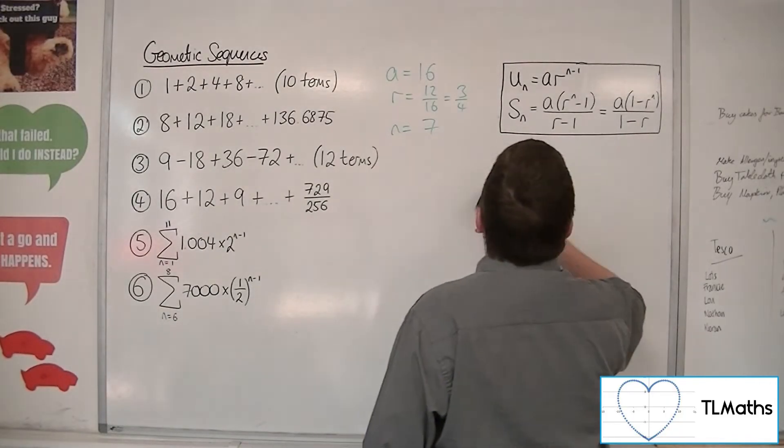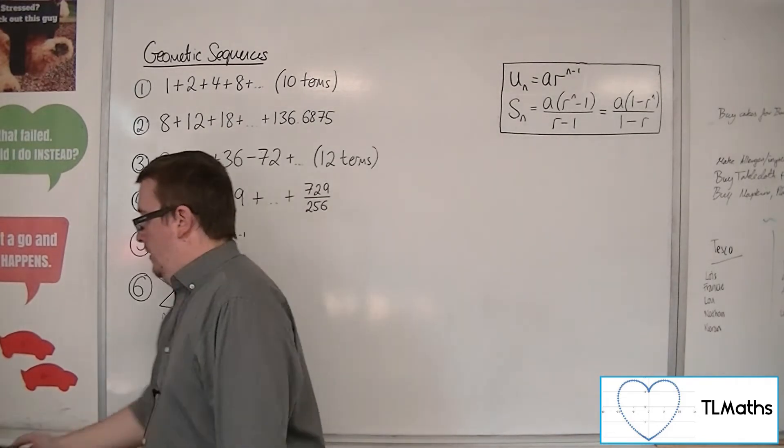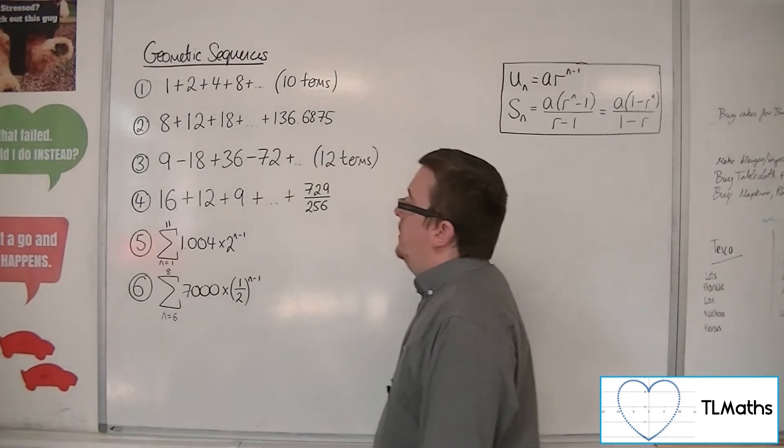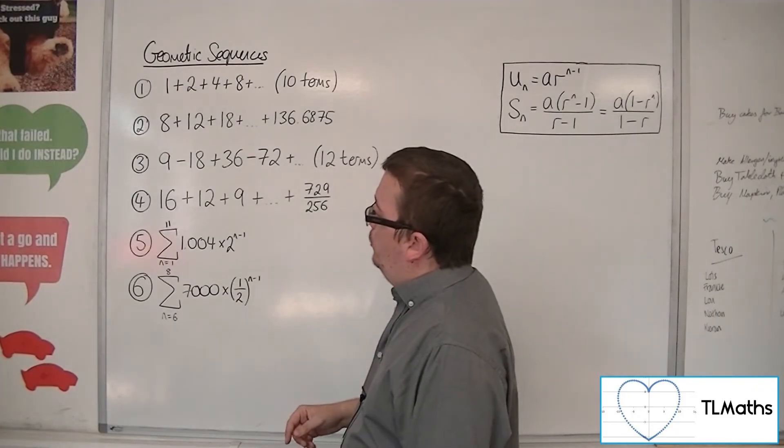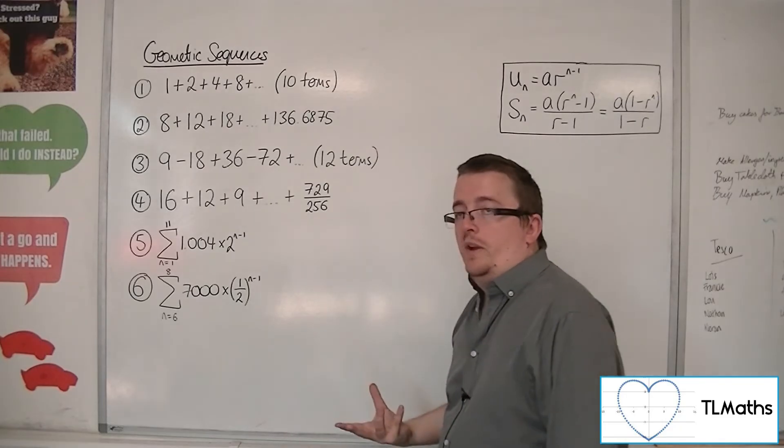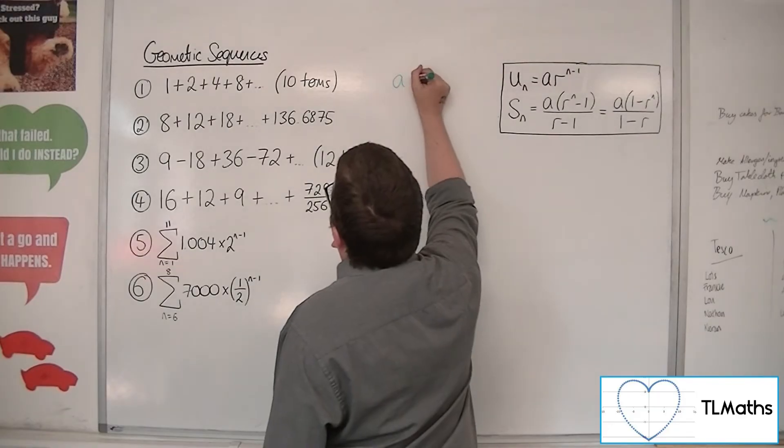We're now going to move into the sigma notation problems, number 5 and number 6. So number 5, we want to find the sum of the nth term, 1.004 times 2 to the n minus 1, from n is 1 up to 11. So we still need to identify a, r, and n here.